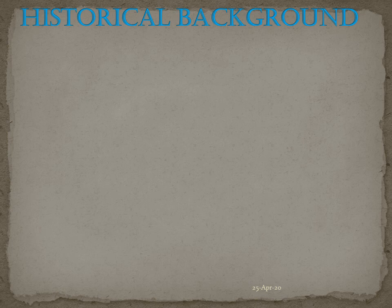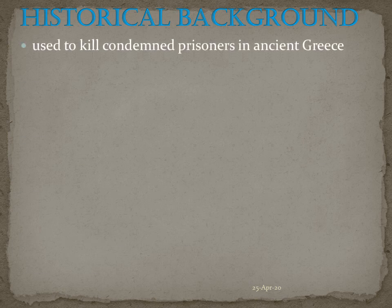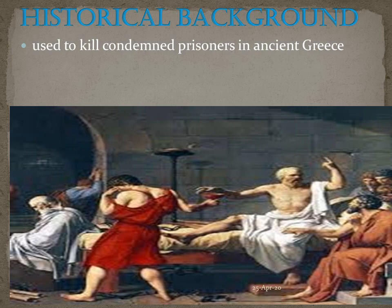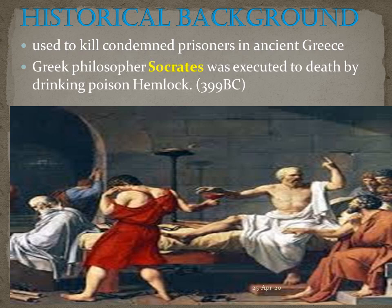Before going into the synthesis of conine, let me share some historical background. As you know, conine is a toxic compound. In the ancient Greek period it was used to kill prisoners. You might have seen a picture at the top right corner in the first slide — do you know the person? He is the great philosopher Socrates. When he was in prison, he was poisoned by conine and executed, and this happened in 399 BC.